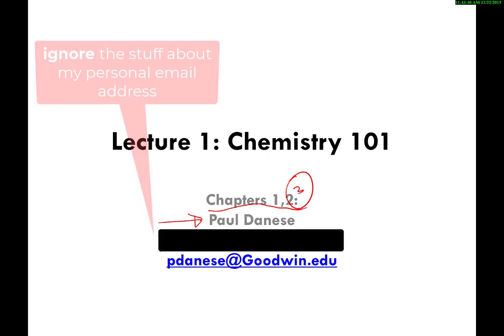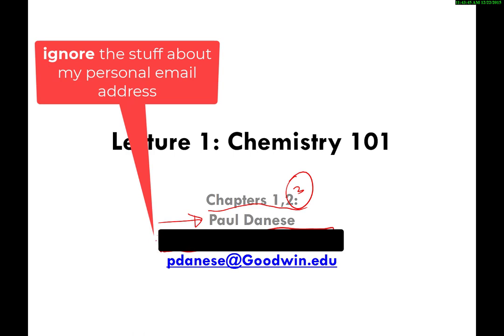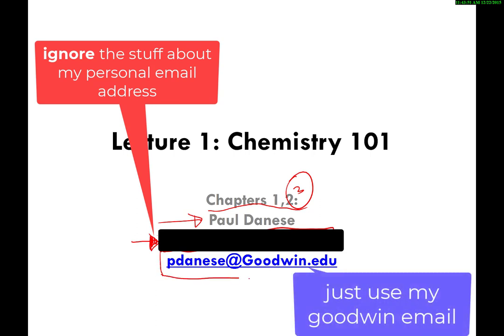It doesn't say three but I just wrote it in. I'm your teacher, my name is Paul Denise. This is my personal slash business email address. You can expect emails from me to come from this email address. I also have a Goodwin.edu email address I do not check very often.